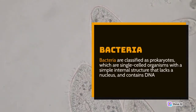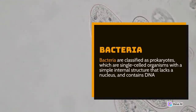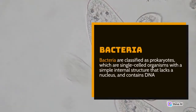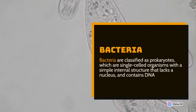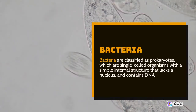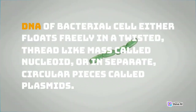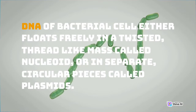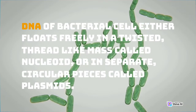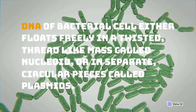Bacteria are classified as prokaryotes, which are single-celled organisms with a simple internal structure that lacks a nucleus and contains DNA. The DNA of a bacterial cell either floats freely in a twisted, thread-like mass called the nucleoid, or in separate circular pieces called plasmids.